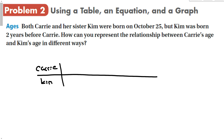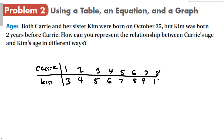The table can go left to right or as two columns. When Carrie is 1, 2, 3, 4, 5, 6, 7, 8 — Kim is 3, 4, 5, 6, 7, 8, 9, 10 — because Kim was born two years before her. We can keep extending this table and format it however we like.